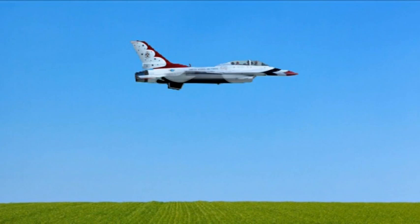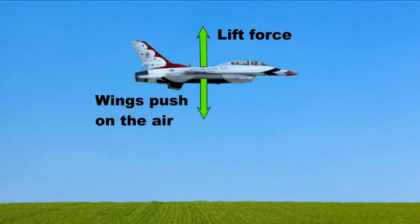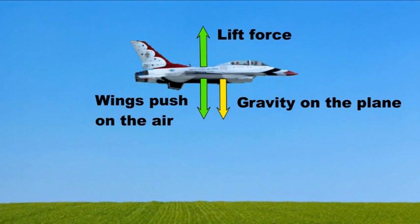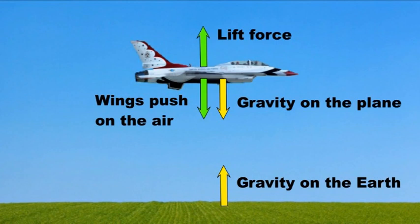The air is making a lifting force on the wings, and in reaction to that, the wings are pushing down on the air. The Earth is pulling downwards on the plane — that's gravity — and the reaction to that is that the plane is pulling upwards on the Earth with gravity. The plane is moving, but its movement isn't changing. We've already said that the forward and backward forces balance, so speed isn't changing. But in fact the height isn't changing either, and so the upward forces working on the plane must balance the downward ones.